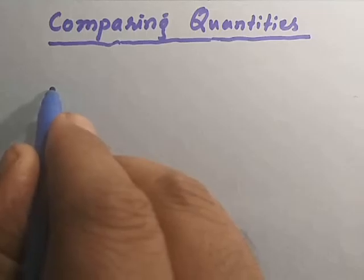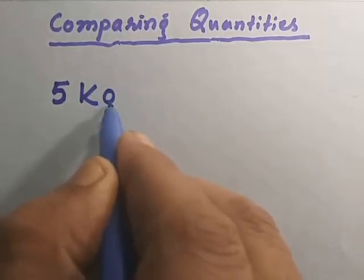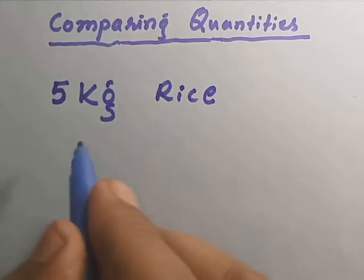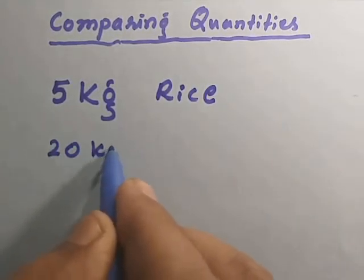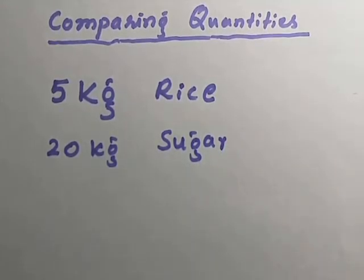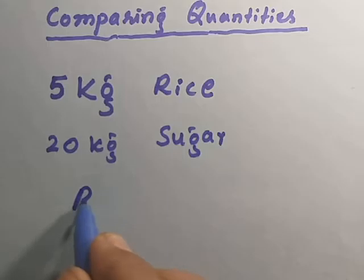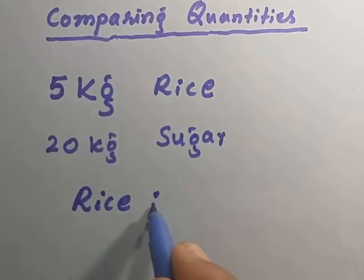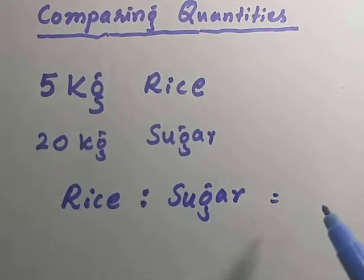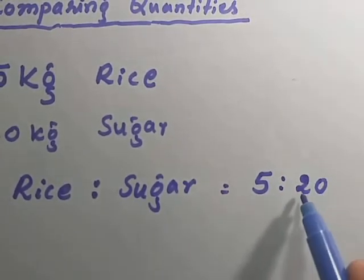Suppose we have 5 kg of rice and 20 kg of sugar. Both of these two quantities can be compared. That is, the ratio of rice to sugar is equal to 5 is to 20. That is how the quantities are compared.